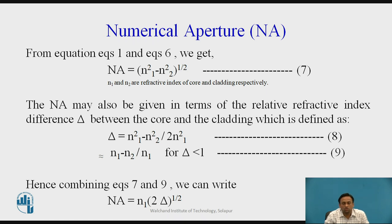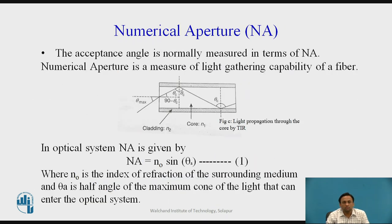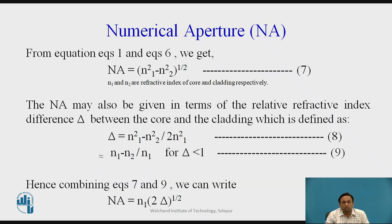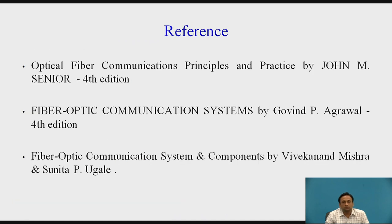Combining equations 7 and 9, NA = n1 × √(2Δ). When solving examples, if the refractive indices n1 and n2 are given, use NA = √(n1² − n2²); if the relative refractive index Δ is given, use NA = n1√(2Δ). NA is ultimately the measure of light-gathering capability of a fiber, and its derivation relies on understanding critical angle and total internal reflection. Those are my references — thank you.